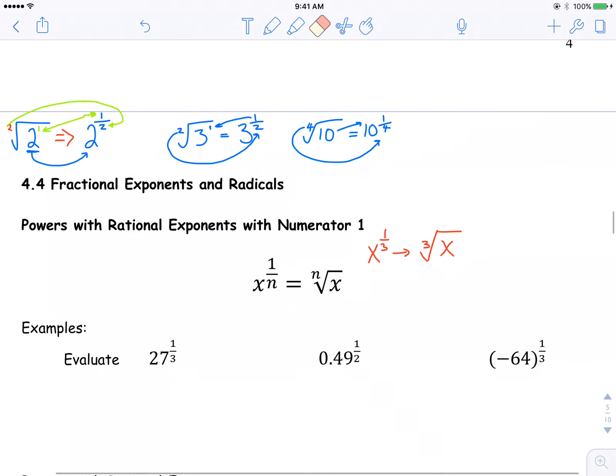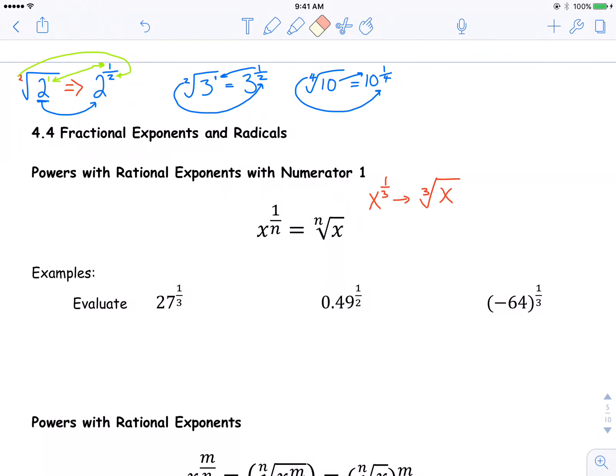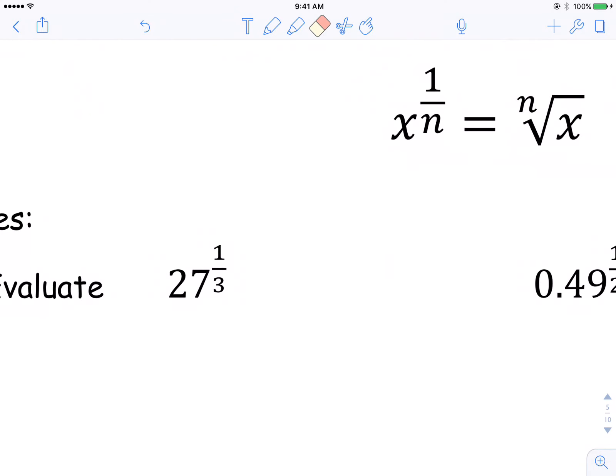So looking at our examples here, evaluate 27 to the 1 third. Now you probably could punch this into your calculator, 27, and find your power button and raise it to the power of 1 third. And you'll still get 3 as your answer.